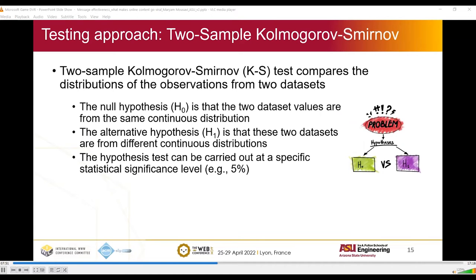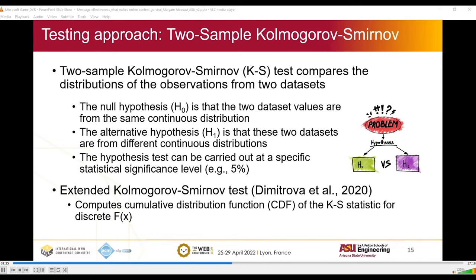Now let's talk about hypothesis testing. To test our hypotheses, we use the two-sample KS Test, which compares the distribution of observations from two datasets. The null hypothesis H0 states that two datasets' values are coming from the same continuous distribution. The alternative hypothesis H1 states that the two datasets are from different distributions. The hypothesis test can be carried out at specific statistical significance levels. Since our data is discrete, we use an extended version of the KS Test developed by Dimitrova in 2020, which enables us to calculate the CDF function for discrete data, one of the requirements of the KS Test.